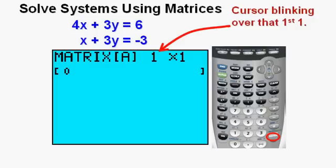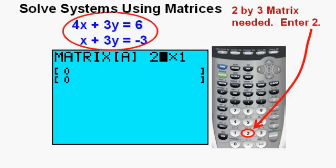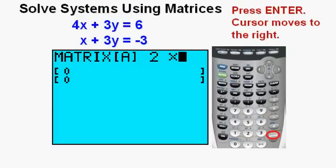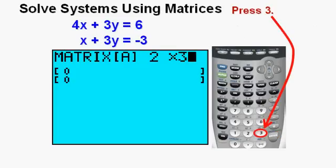We are now in a matrix setup screen with the cursor blinking over that first one. This is where we set up the dimensions of the matrix. We look at the system we are solving and see that it is lined out in two rows and three columns. This calls for a 2 by 3 matrix. We press 2, then enter. This takes us to the right where we need to enter the number of columns. Press 3, then enter.